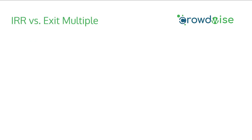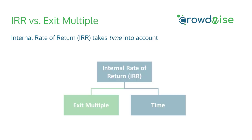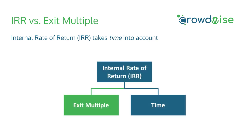So, IRR versus exit multiple — at a high level, what's the difference? The biggest difference between the two is that internal rate of return takes time into account. If you look at a diagram showing the internal rate of return and exit multiple, you can see where exit multiple is a component of IRR, but IRR also has time.